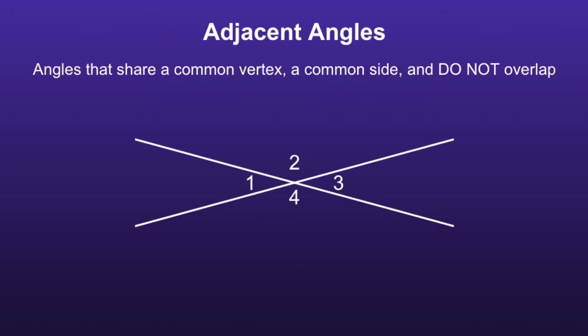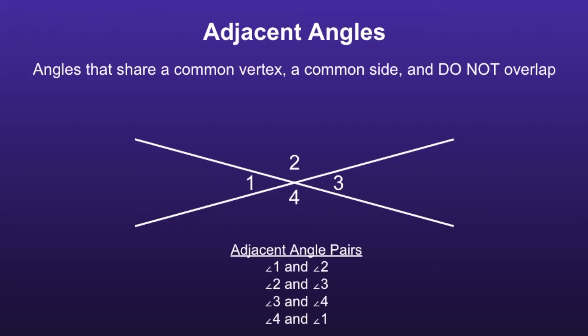Adjacent angles are angles that share a common vertex, a common side, and do not overlap. The adjacent angle pairs in this picture would be angles 1 and 2, angles 2 and 3, angles 3 and 4, and angles 4 and 1.